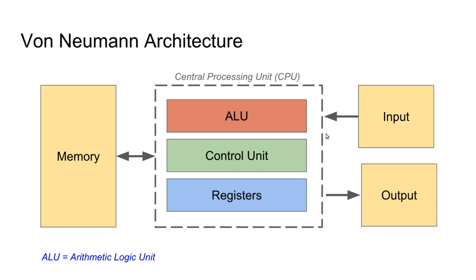The von Neumann architecture can be diagrammed simply. The core is the Central Processing Unit (CPU), constructed of three major units: the ALU (Arithmetic Logic Unit), which performs additions, subtractions, comparisons, and binary operations; the registers, which store clusters of bits for values calculated by the ALU or retrieved from input devices or memory; and the control unit, which regulates the transfer of information between registers, the ALU, and connecting devices for input, output, and system memory.